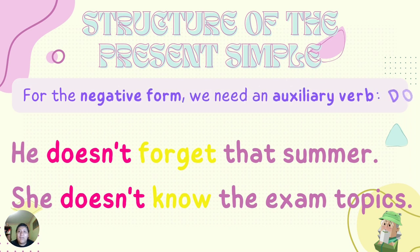And here we have an extra. For the negative form, we need an auxiliary verb: DO. For example, he doesn't forget that summer. In the negative form, we don't need to change the main verb — we need to use correctly the negative of the auxiliary verb; in this case, DO becomes DOESN'T. She doesn't know the exam topics. In both cases, the main verb doesn't change, only the auxiliary verb.